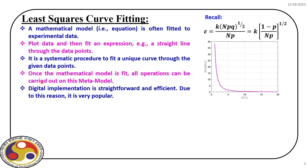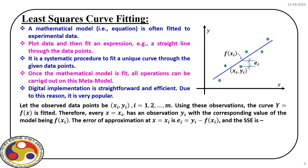Once the model is ready, the original function g(x) is replaced with a new function r(x), which is a function of all the random variables. We can then use this metamodel instead of g(x) for our reliability analysis. Its digital implementation is very straightforward and efficient, making it very popular for reliability analysis — particularly for structures where finite element analysis is needed and we have a very complex model.